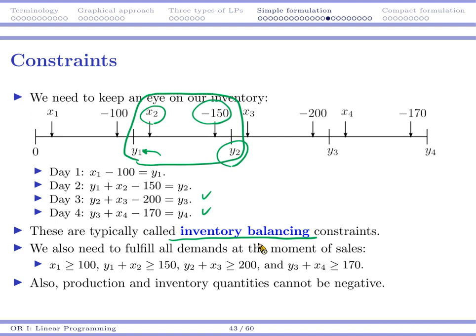So we are calculating our inventory levels according to these equations. Of course, we need to satisfy all the demands, right? So for day one, x_1 is the only source of inventory. So x_1 must be at least 100. For day two, we need to have enough amount to be sold. That's y_1 plus x_2. That should be at least 150, and so on. And then all the numbers should be non-negative.